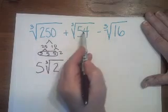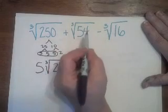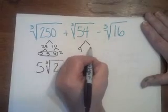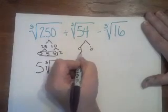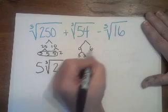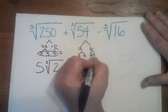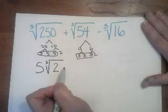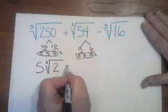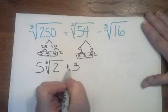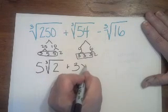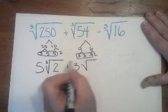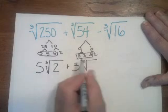How about this one? Well, I can break down 54 as 9 times 6, right? 9 is 3 times 3. 6 is 3 times 2. And once again, I have 3 threes. The 3 gets out of jail, or the box. And I'm still left with the cube root of 2. Looking promising here.